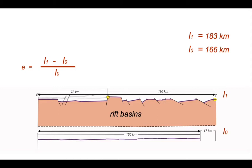L0 is 166 kilometers. The difference 17 kilometers is the amount of kilometer stretch that the crust has seen. The elongation that represents is 0.1. It's a positive value because the crust has been extended as it went from L0 to L1.